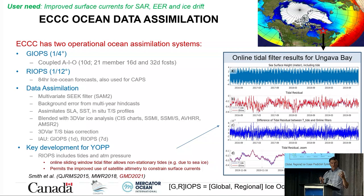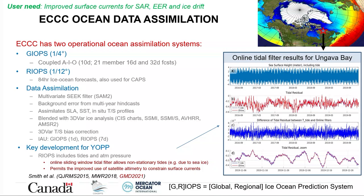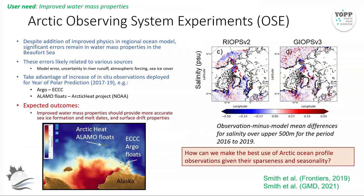Starting as an oceanographer with the ocean: we have two operational ocean analysis systems - a global system supporting the global deterministic and ensemble systems, and a regional system covering roughly the domain shown on the top right. One development we made for YOP was with respect to tidal filtering. Ocean assimilation systems typically assimilate satellite altimetry to constrain mesoscale circulation, and regional models including tides have to filter these tides to compare against satellite data. In the Arctic, sea ice introduces a time-varying stress that can affect tidal harmonics, so we developed an online approach to remove the tides, allowing more consistent and accurate use of satellite altimetry to better constrain mesoscale and finer-scale features in the Arctic.